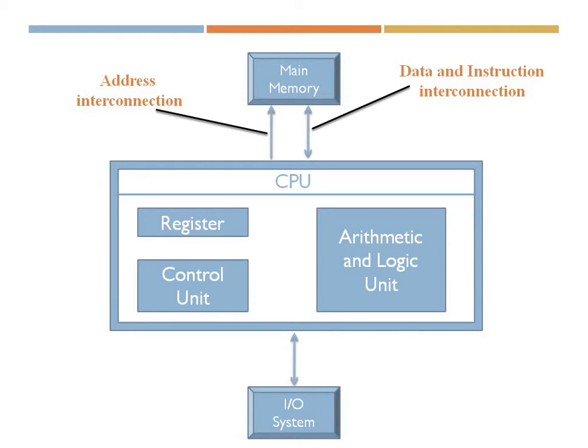The second interconnection is the data and instruction interconnection, which is between the CPU and main memory, and is bi-directional — data is sent and received to and from both sides. If I want to perform any operation inside my ALU, I need the instructions and data for processing, and those are received via this interconnection.